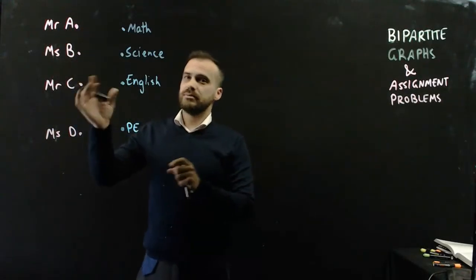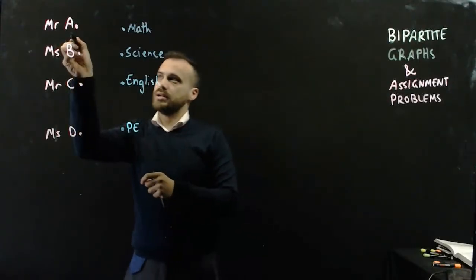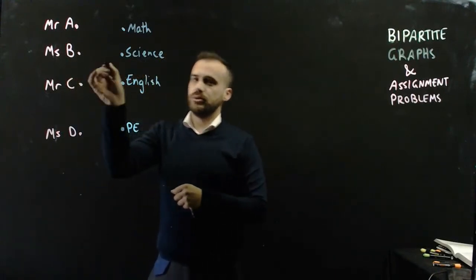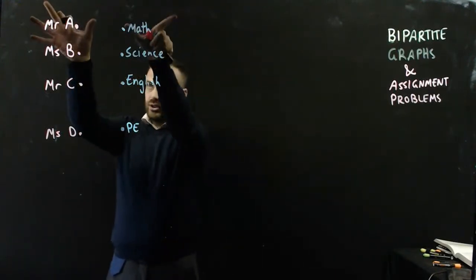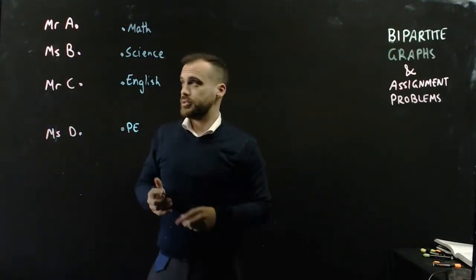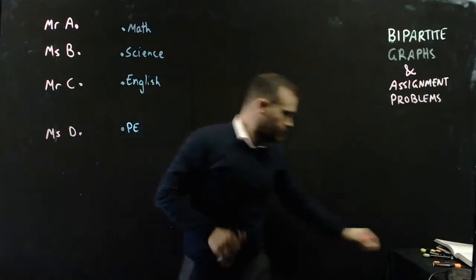So it doesn't make sense to connect a teacher to a teacher. We're connecting a pink dot to a blue dot. It's a bipartite graph, because these vertices only connect to these vertices. All right, so let's join them up.